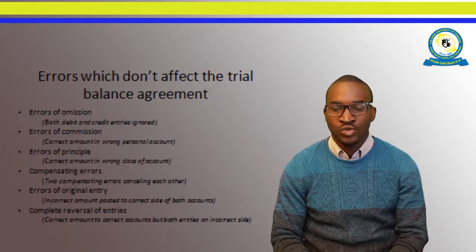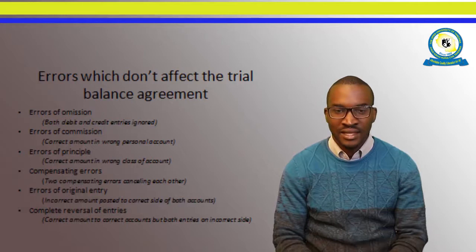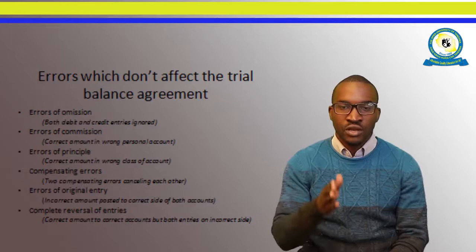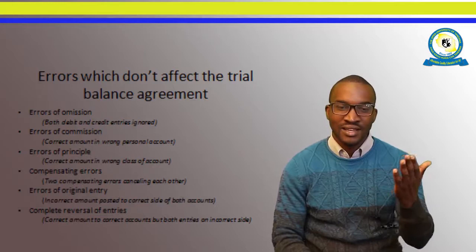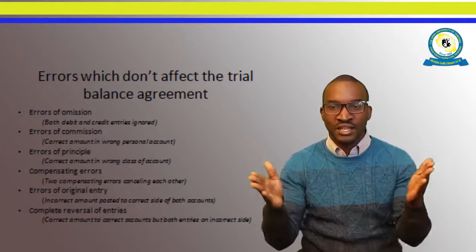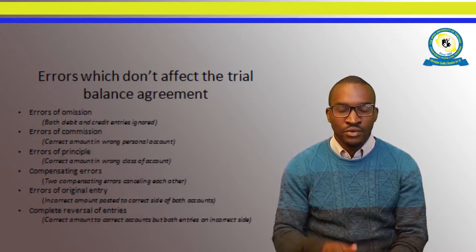Errors of commission: you post the correct amount but into the wrong personal account — expect the trial balance to still balance, but there is an error. Errors of principles: you post the correct amount to the wrong class of account — for example, posting an expense account into a capital account. Both have the same debit nature, so the trial balance will balance, but in principle you have posted to the wrong class. Compensating errors are two errors that cancel each other out — one error on one side and another error on the other side, so you will not be able to see them in the trial balance.